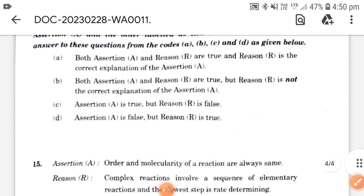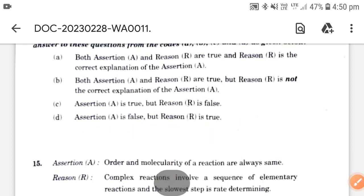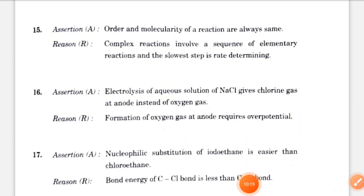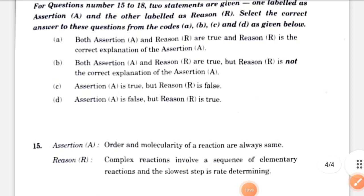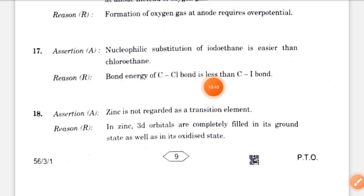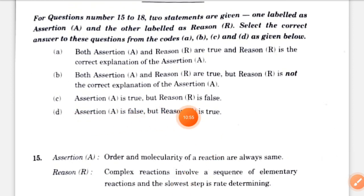Question 16: assertion — electrolysis of an aqueous solution of NaCl gives chlorine gas at the anode instead of oxygen gas. This is correct. Reason — formation of oxygen gas at anode requires overpotential. This is also correct. Correct option: both assertion and reason are true and reason is the correct explanation. Question 17: nucleophilic substitution of iodoethane is easier than chloroethane — this is true. But the reason — bond energy of C-Cl bond is less than C-I bond — is false. Correct option: assertion A is true but reason R is false.